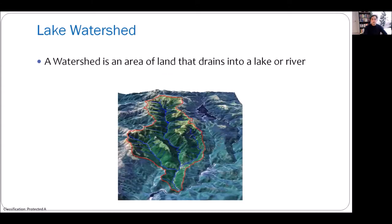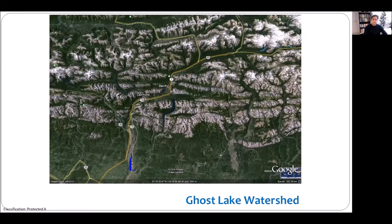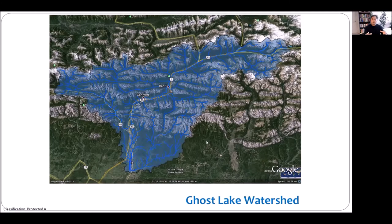A watershed is an area of land that drains into a lake or river. For example, the Ghost Lake watershed shows the lake in blue, with all the tributaries coming from different parts of the watershed into the lake. Any precipitation or surface runoff occurring in that area is flowing into the lake — that's what the watershed looks like for Ghost Lake.